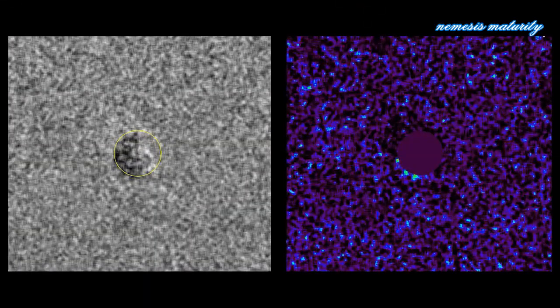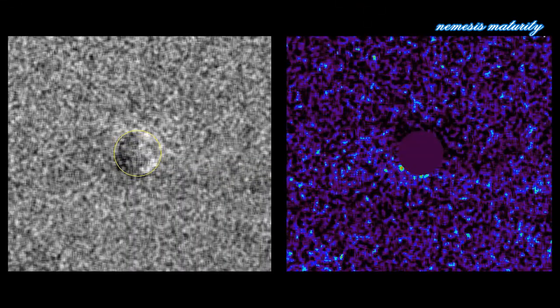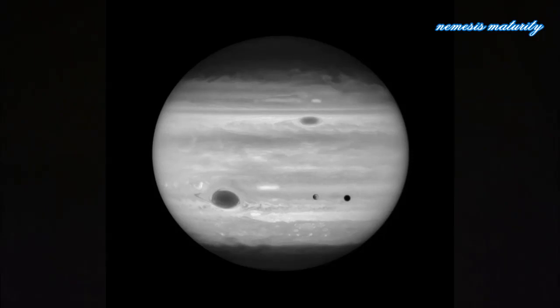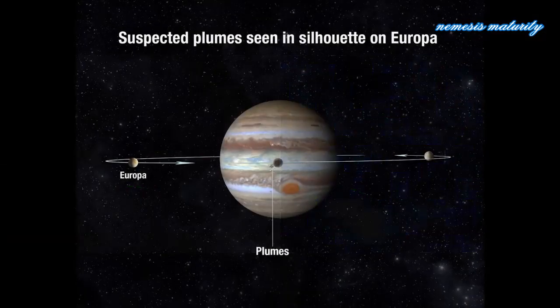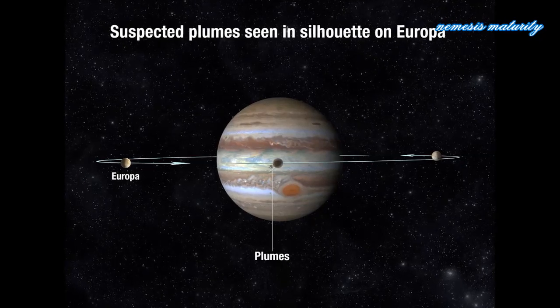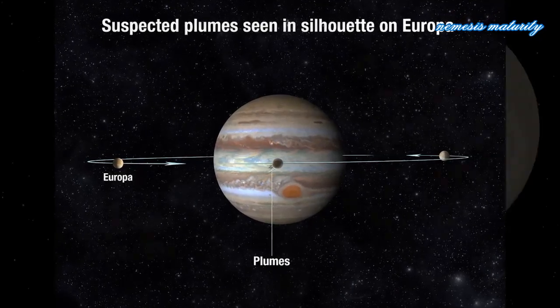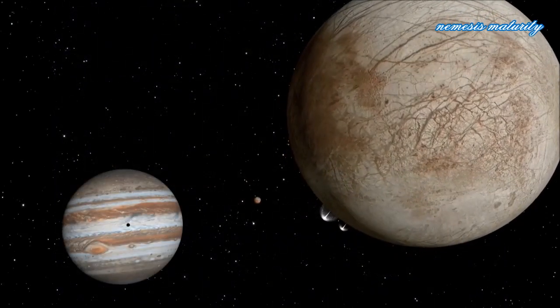Now, a different team of astronomers has used a different method with similar results. They used Hubble to image Europa in ultraviolet light as the moon transited across the disk of Jupiter, and were actually able to take direct images of what appear to be the silhouettes of plumes rising about 125 miles above the surface of Europa.